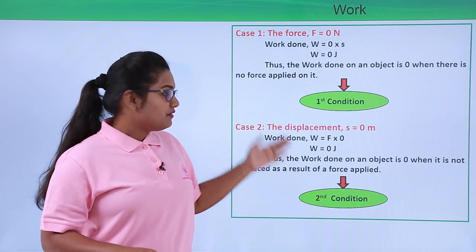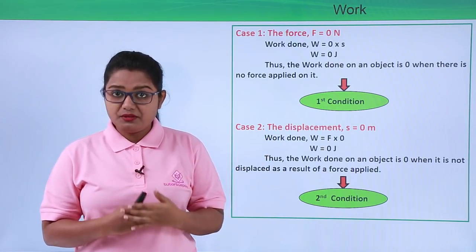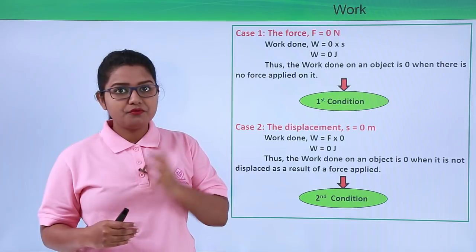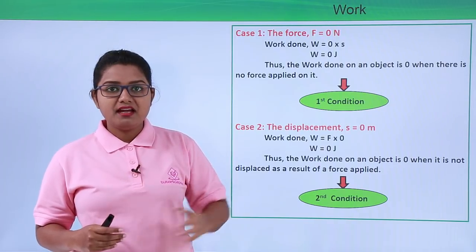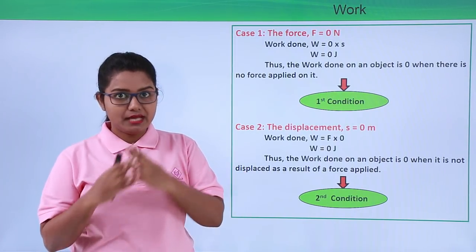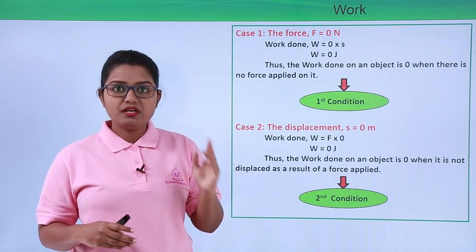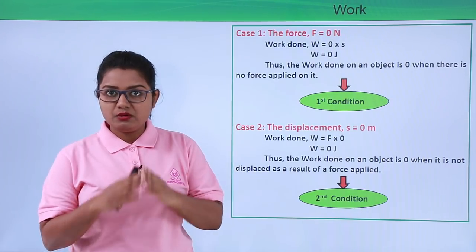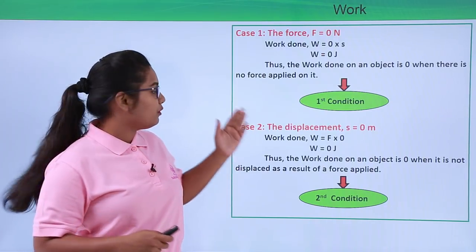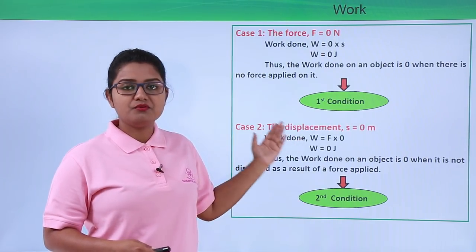With this we have come to the end of this video. We have learnt about the work done due to a constant force, found the formula W = F × S, determined the unit of work done to be 1 Joule which equals 1 Newton meter, and verified the first and second conditions of work done.